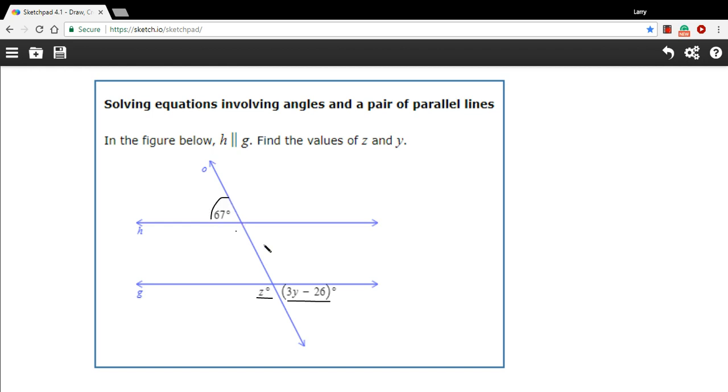First of all, I'm going to use what we know about vertical angles. If this one on the top left is 67, and they're telling us that it is, then this one has to be 67 as well.